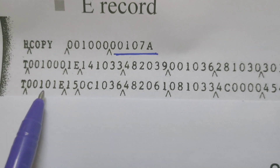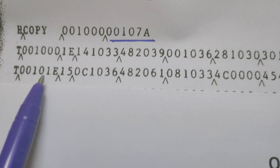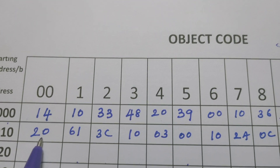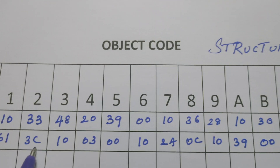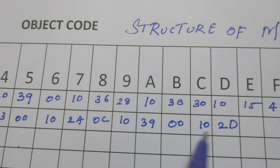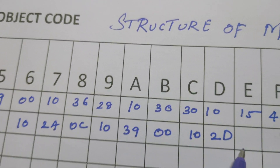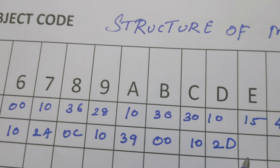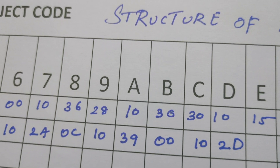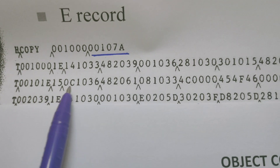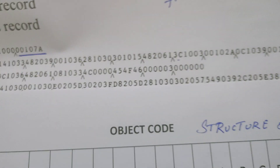Now let us see the second text record. The second text record says its starting address is 101E. Memory from 1010 through 1014 has already been filled. From address 101E, we are supposed to write the second text record. The length of this text record is 15 bytes.